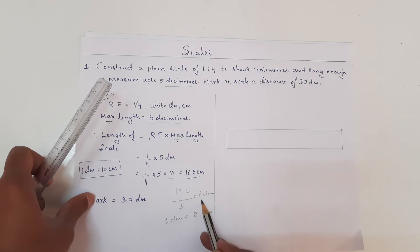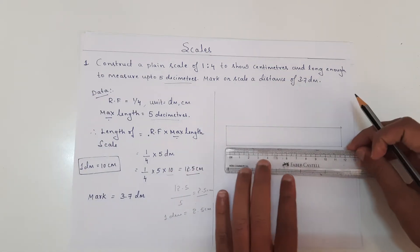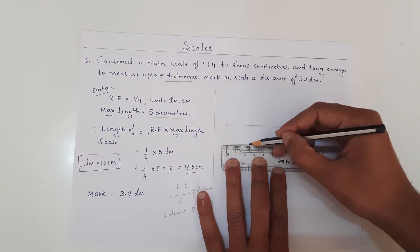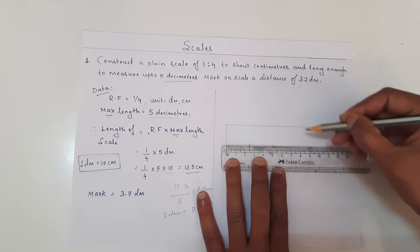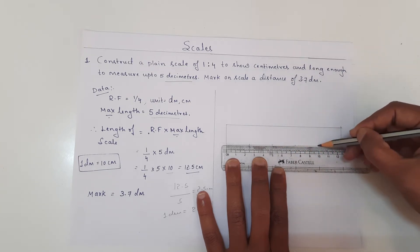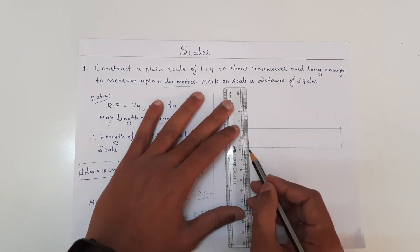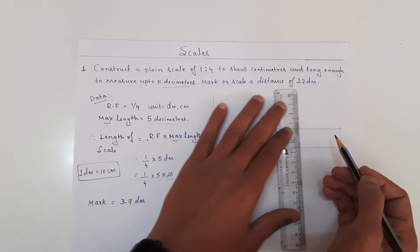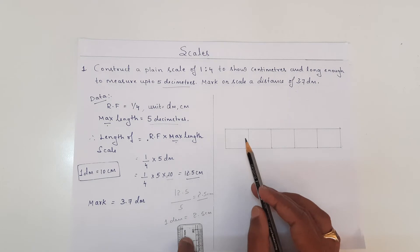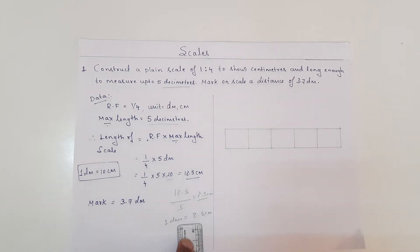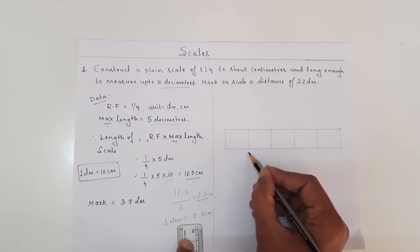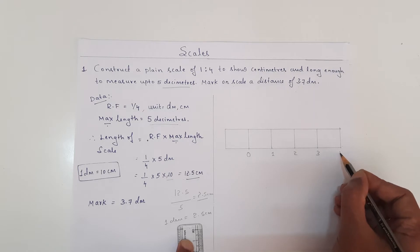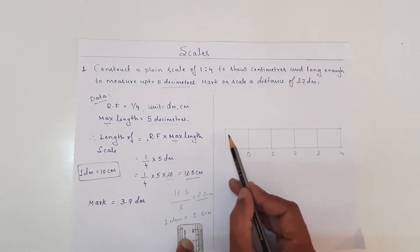12.5 divided by 5 equals 2.5 centimeters. So I am going to mark 2.5 centimeters from the end — 2.5, 2.5, 2.5 and so on. Then I am going to draw vertical lines. Each box represents 1 decimeter. I am going to mark this as 0, 1, 2, 3, and 4.